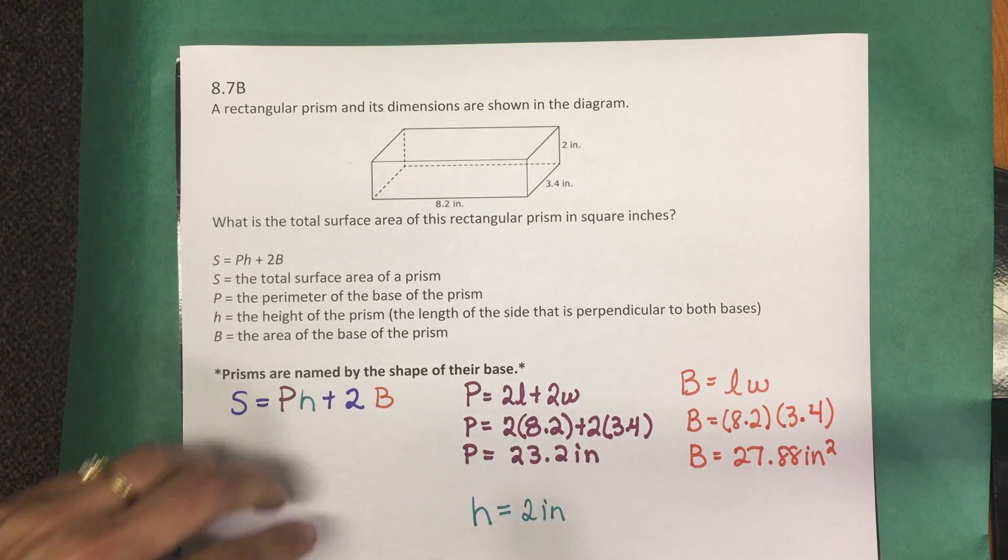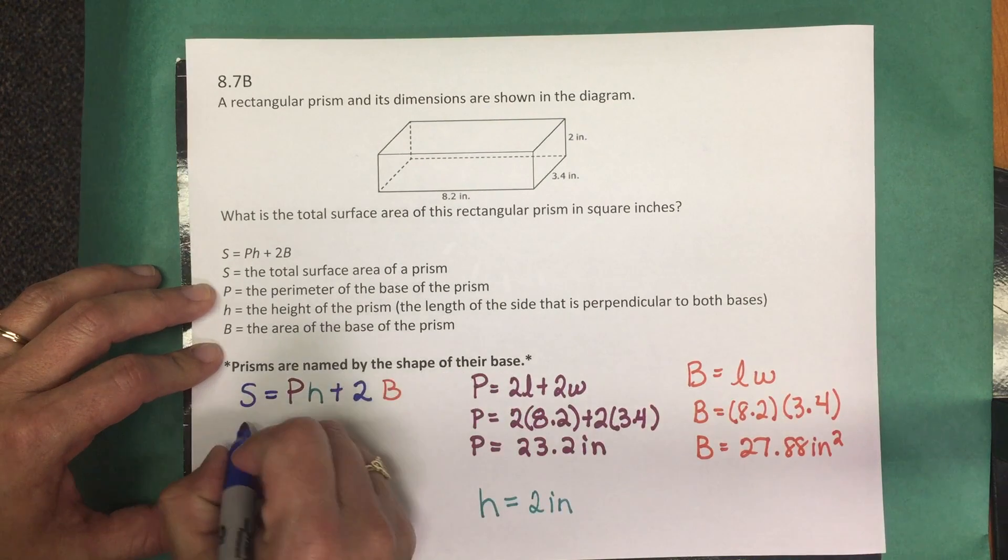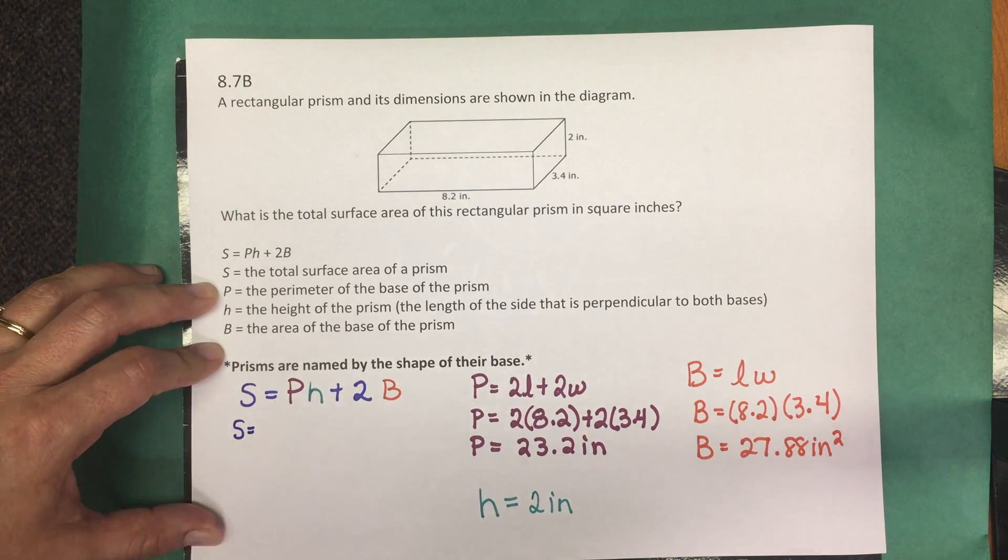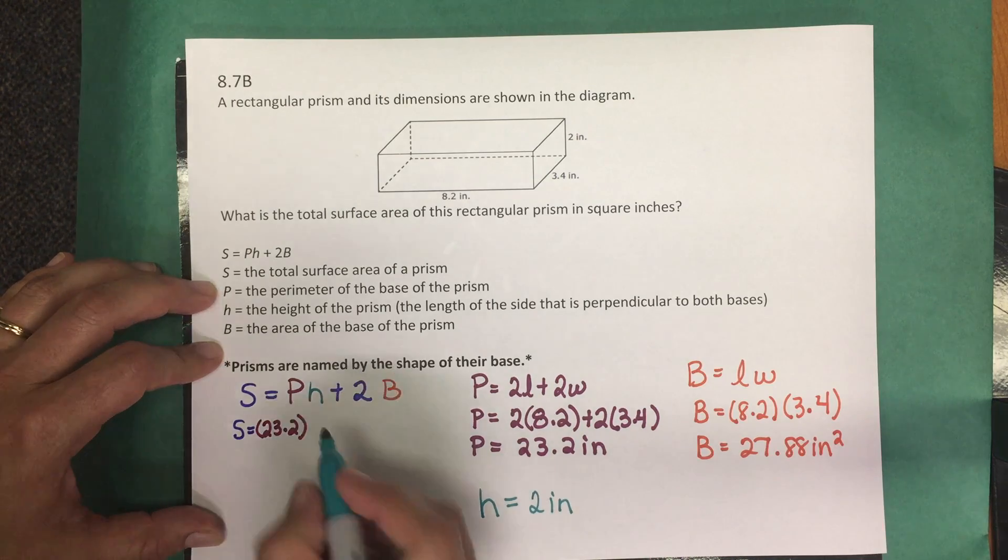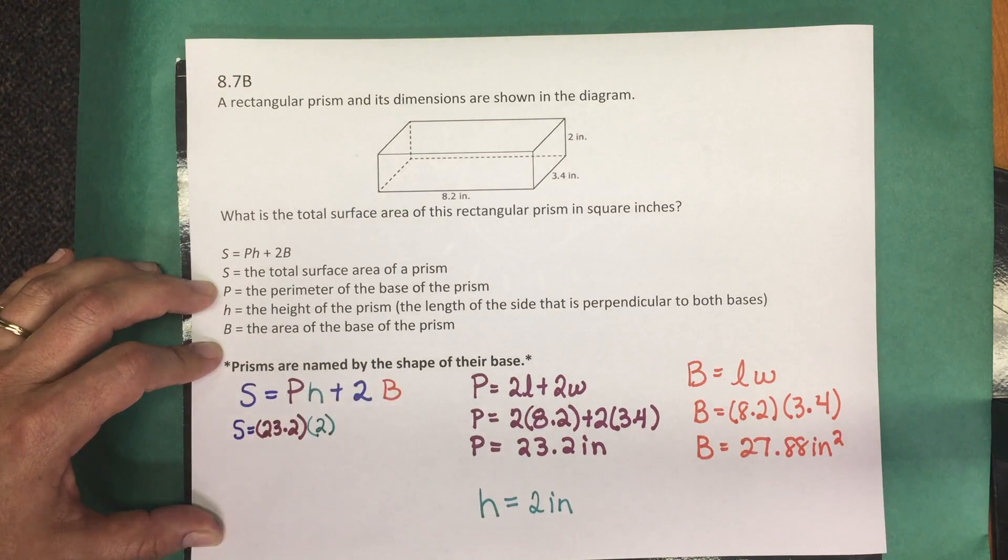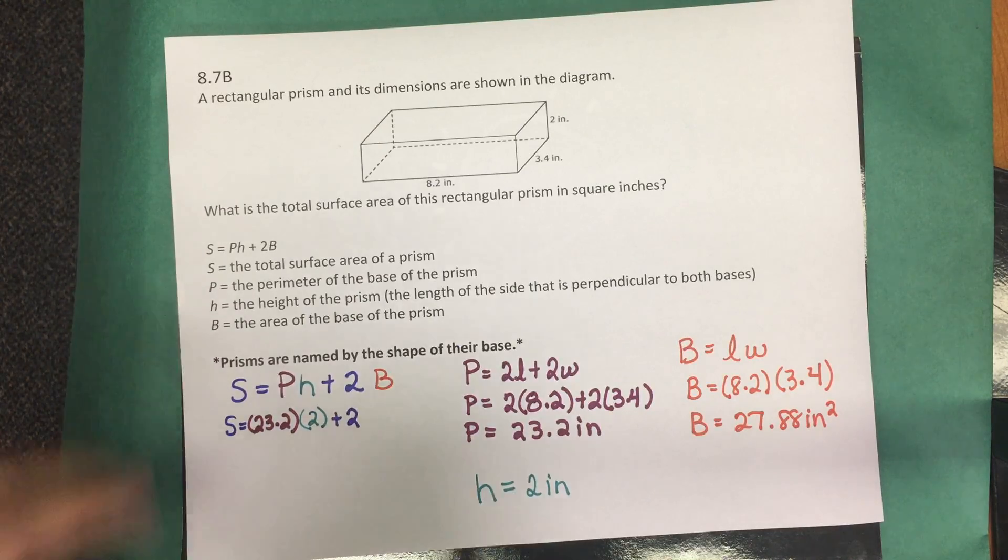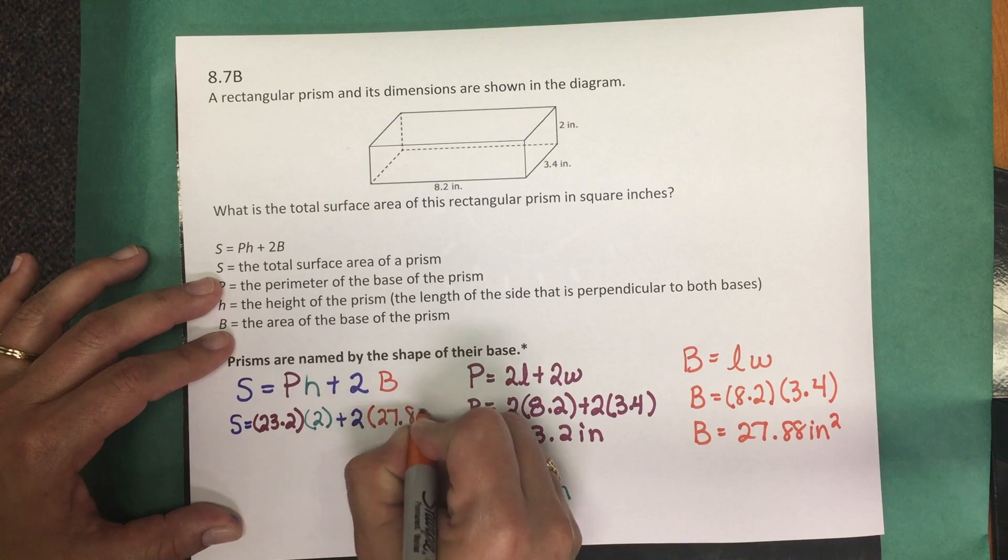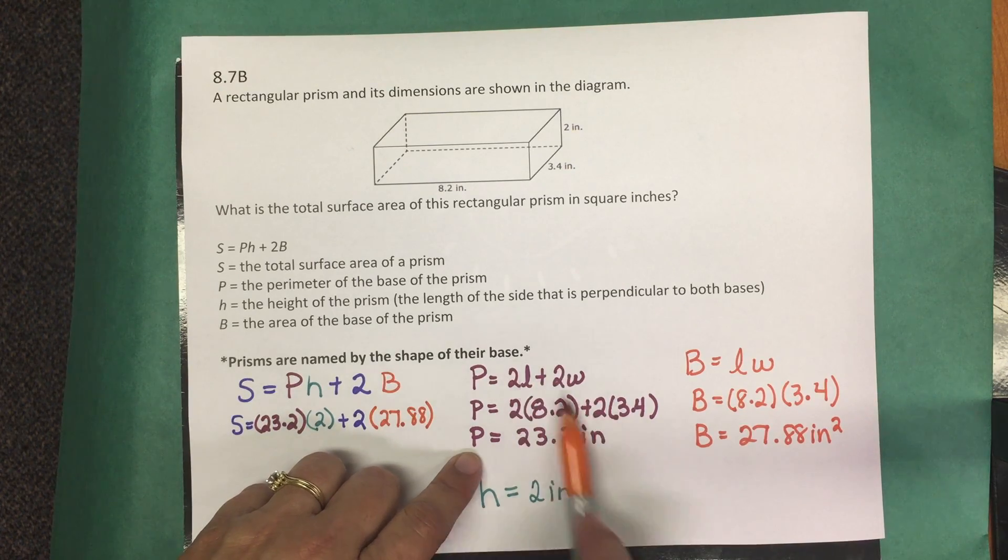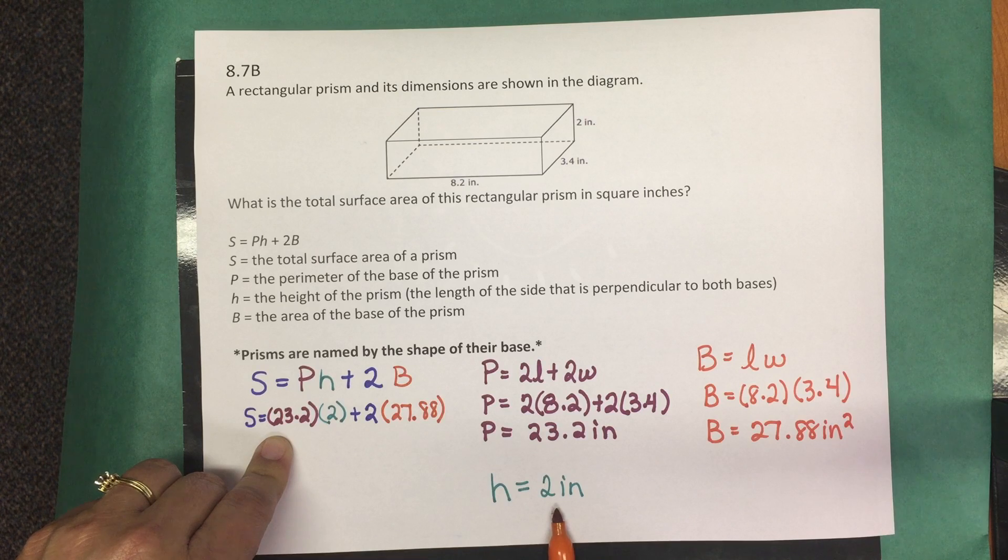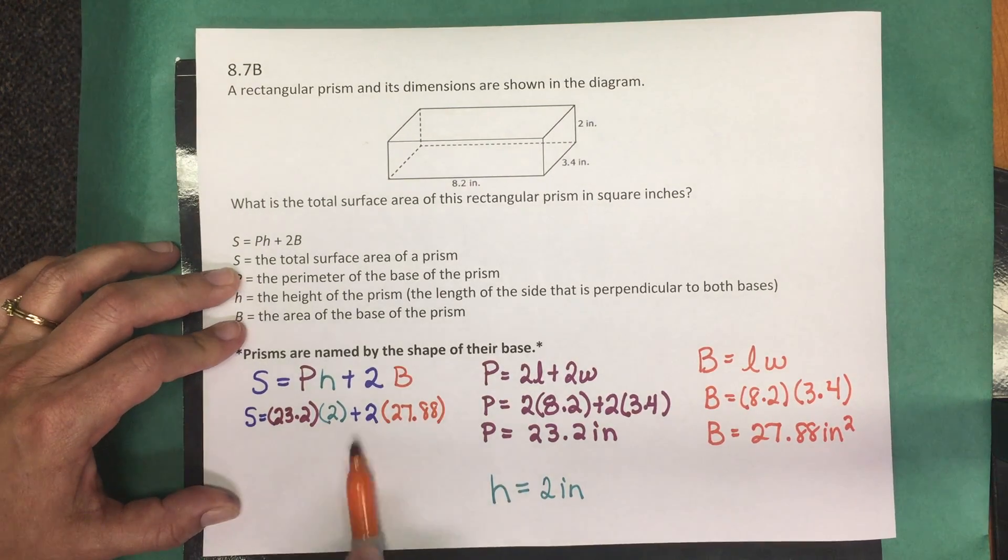Now we're going to take these values that we just calculated and substitute into the formula for total surface area. So S equals P—our perimeter of the base is 23.2 inches—the height of the prism is 2 inches, plus 2 (that's part of the formula), the area of the base is 27.88 inches squared. Just a reminder: we calculated perimeter, substituted that value into the formula; found the height from the diagram, substituted that value into the formula; found the area of the base, substituted that value into the formula. Now we're going to simplify.